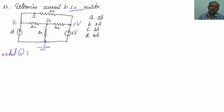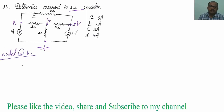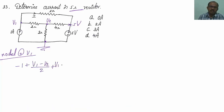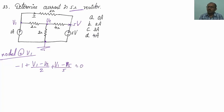Let me apply nodal analysis at V1. I will be getting: minus 1 plus V1 minus V2 divided by 2 plus V1 minus 5 divided by 5 equals 0. I am solving most of the problems by nodal analysis, so you should be a master in nodal analysis.